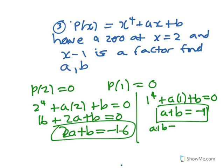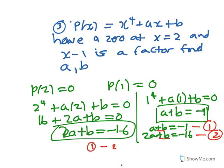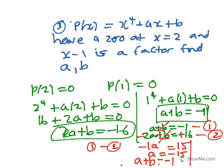So we have two equations: a plus b equals minus 1, and 2a plus b equals minus 16. The b's are the same, so we do equation 1 minus equation 2. That gives minus a equals 15, so a equals minus 15. To find b, substitute back: minus 15 plus b equals minus 1, so b equals minus 1 plus 15, giving b equals 14.